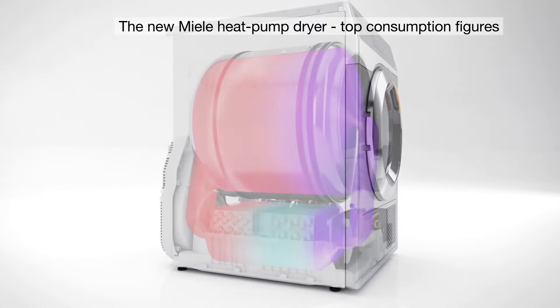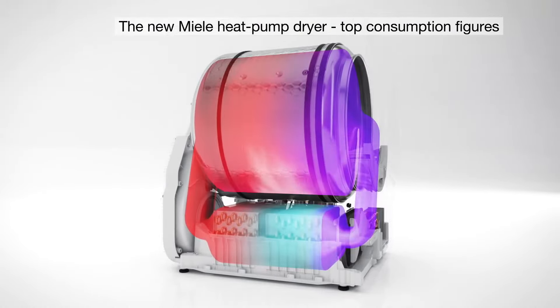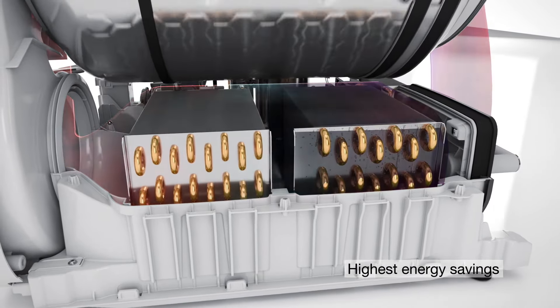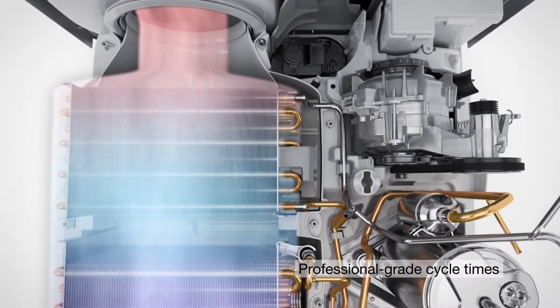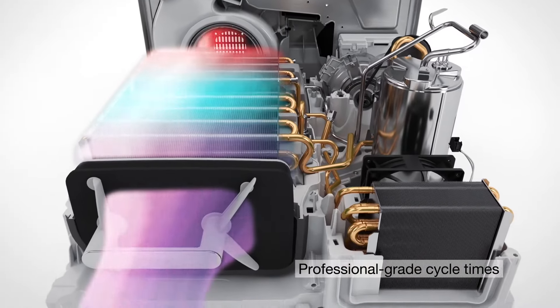Miele Dryer's innovative air recycling system recirculates 60% of the process air back into the drying process. And because the air doesn't need to be reheated, energy and gas consumption is significantly reduced and drying times are shorter.